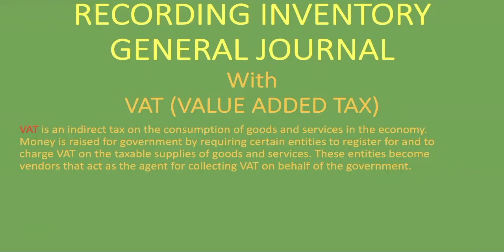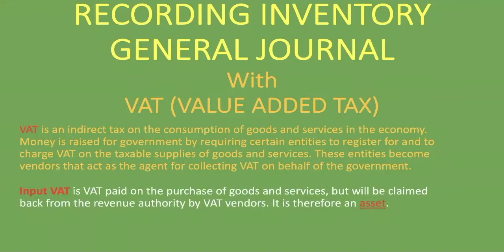VAT is divided into two: input VAT and output VAT. Input VAT is VAT paid on the purchase of goods and services, but it will be claimed back from the revenue authority by VAT vendors — it is therefore an asset. Whenever a VAT vendor buys products from a supplier, the supplier charges them including VAT. At the end of the period, the company claims back whatever VAT they paid from the revenue authority.